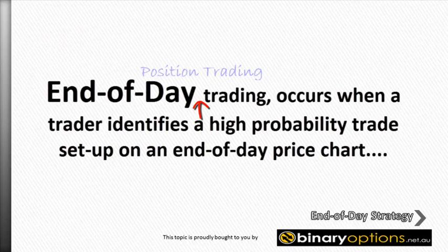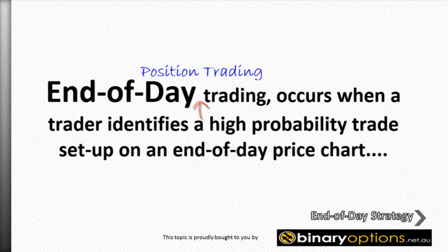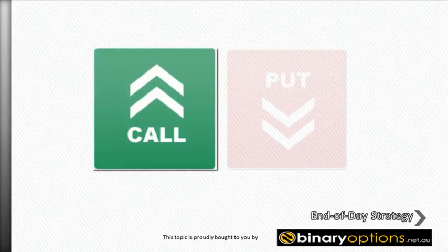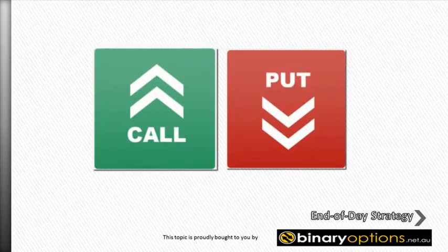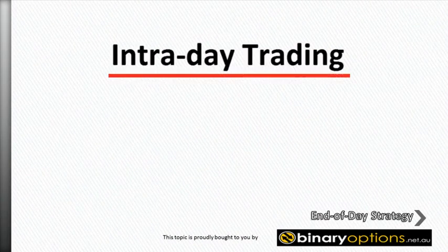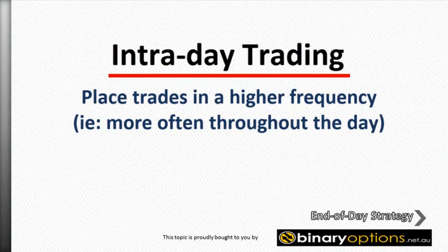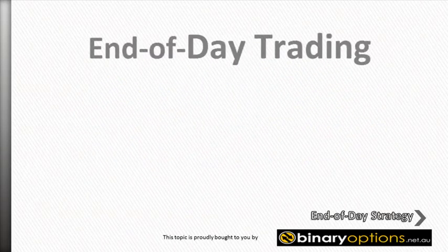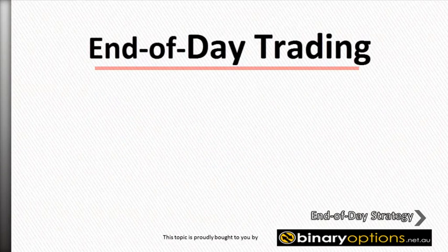End of day trading, also known as position trading, occurs when a binary options trader identifies a high probability trade setup on an end of day price chart and places a buy, call or sell, put position the very next trading day. As opposed to intraday trading whereby traders place trades in a higher frequency, i.e. more often throughout the day, an end of day trader places trades less frequently.